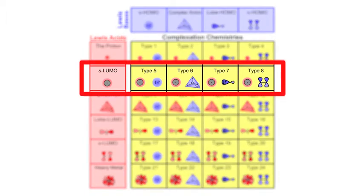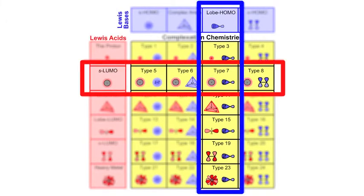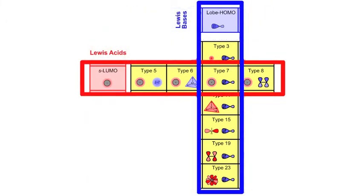We are going to see how the Lewis acid base interaction works. We are going to start with the S Lumo Lewis acids and see how they interact with the Lobe Homo Lewis bases to give type 7 Lewis acid base complexes.